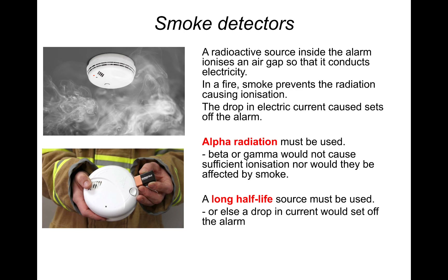Smoke detectors use a radioactive source inside the alarm to ionize an air gap so that it conducts electricity. In a fire, smoke prevents the radiation from causing ionization, and the resulting drop in electric current sets off the alarm. The smoke breaks the circuit, and a secondary circuit detects this and sounds the alarm. Alpha radiation must be used - beta or gamma would not cause sufficient ionization and would not be affected by the smoke. A long half-life source must be used, or a dropping current would falsely trigger the alarm. The isotope used in smoke detectors is americium, which has a long half-life.